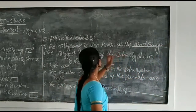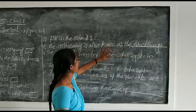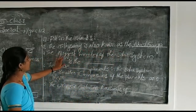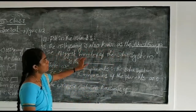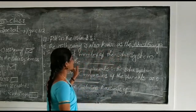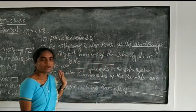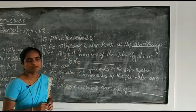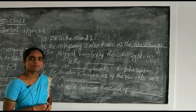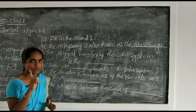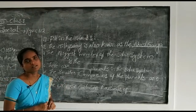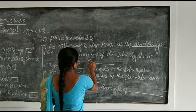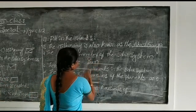Akash Ganga is also known as the Milky Way. Second one: the biggest member of the solar system is what? The biggest member of the solar system is the sun.